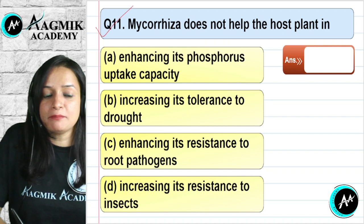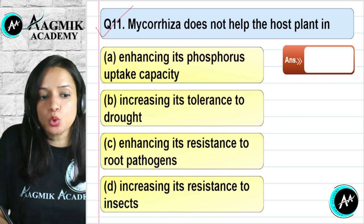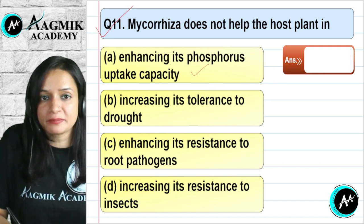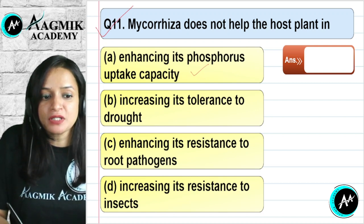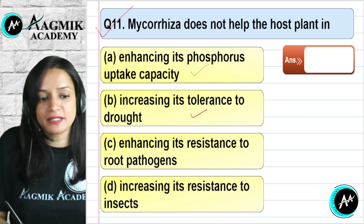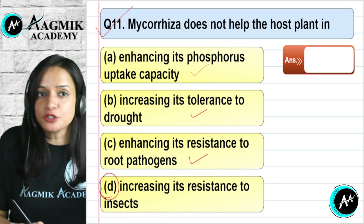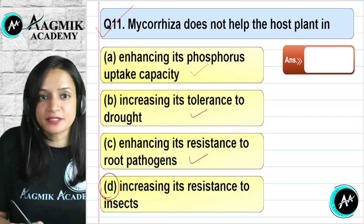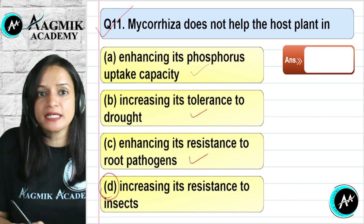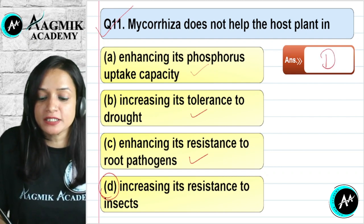Question number 11: Mycorrhiza does not help the host plant in which way? It does enhance phosphorus uptake capacity, increase tolerance to drought, and enhance resistance to root pathogens — all correct benefits. However, mycorrhiza does not increase resistance to insects; there is no such relationship. The incorrect option is D.